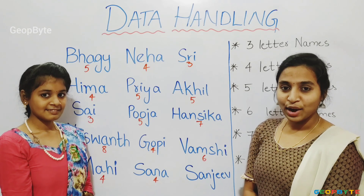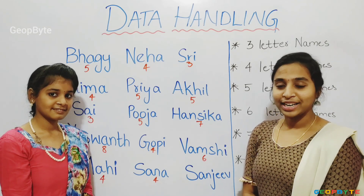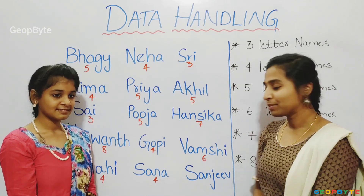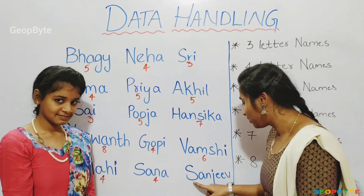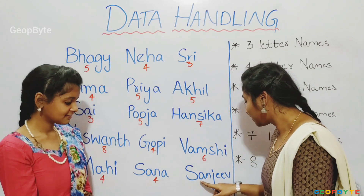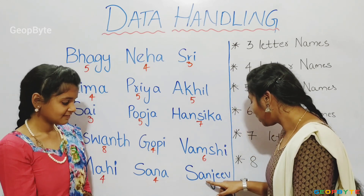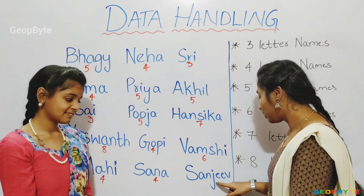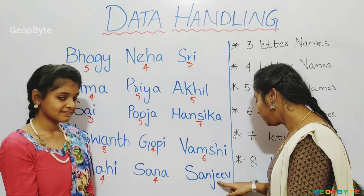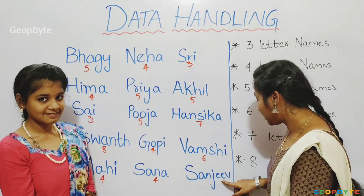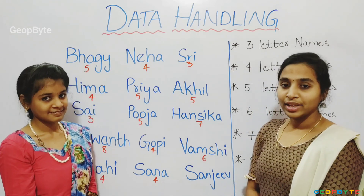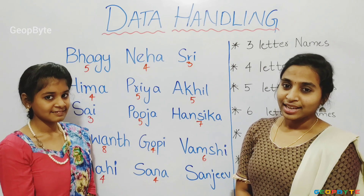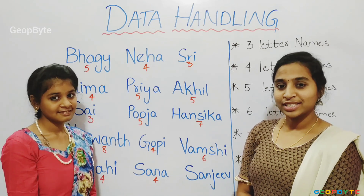Let us count how many letters in the name Sanjee. One, two, three, four, five, six, seven. There are seven letters in the name Sanjee.